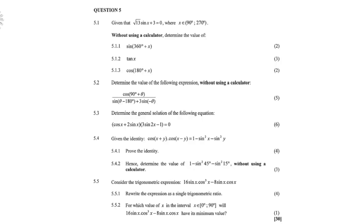Question 5, 5.1. This is the start of trigonometry. Given that the square root of 13 sin x plus 3 equals 0, where x is defined between 90 degrees and 270 degrees — that means it is the second and third quadrants. Without using a calculator, determine the values of sin(360 + x), tan(x), and cos(180 + x).